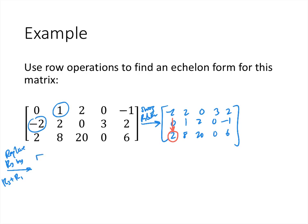Applying that replacement doesn't change the first row: negative 2, 2, 0, 3, 2. The second row already has a zero where we want it: 0, 1, 2, 0, negative 1. In the third row, adding the first row gives us: zero, then 2 plus 8 is 10, 0 plus 20 is 20, 3 plus 0 is 3, and 2 plus 6 is 8. So we now have zeros below the first leading entry.